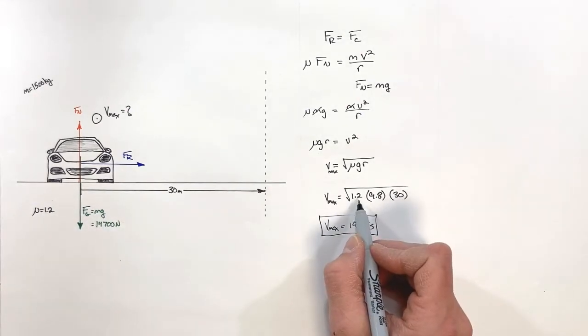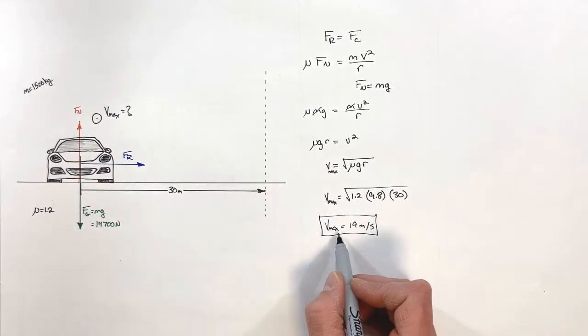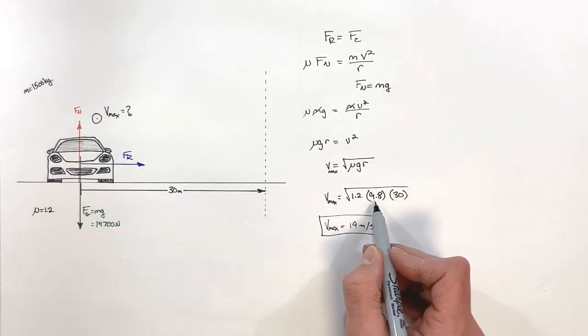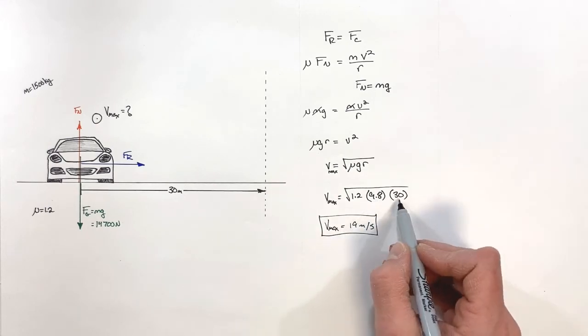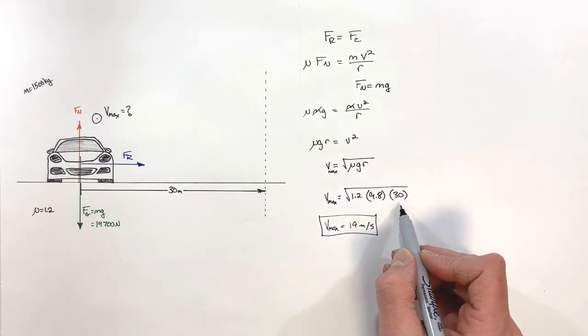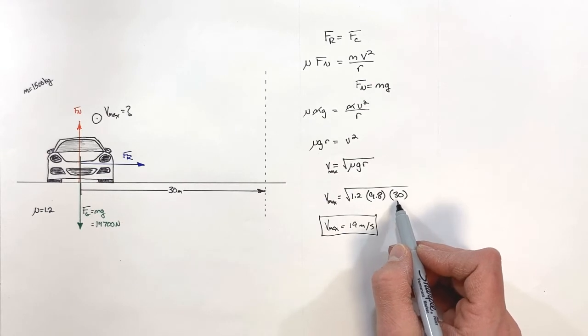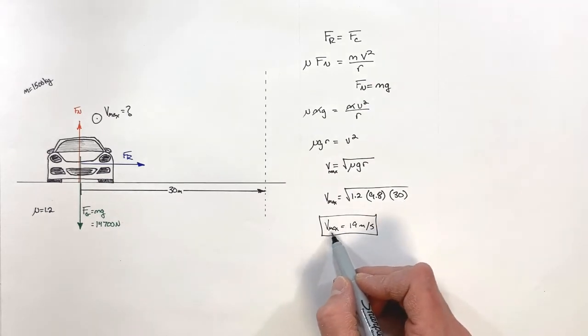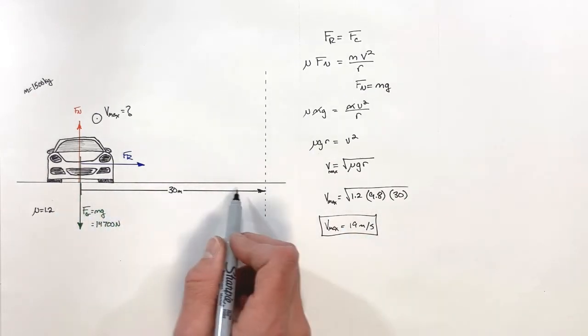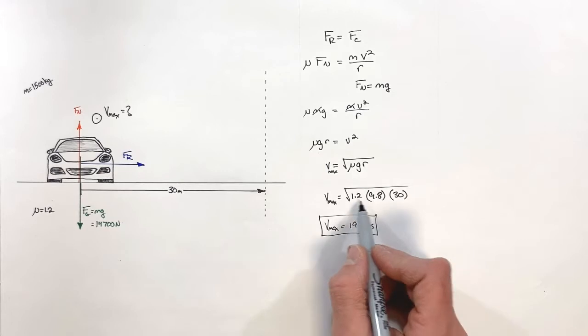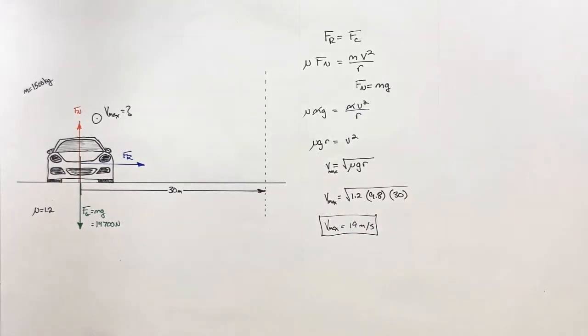By improving the tires, we would increase this coefficient of friction, and if the coefficient of friction was greater, that would increase the maximum velocity. Now, unfortunately we can't actually change the acceleration due to gravity, and the radius of the corner—well, that one's pretty much set. Yes, we could have a different corner with a greater radius, which would mean we could drive around a bigger corner faster. But if we're stuck with this 30 meter radius corner, well, we can really only change the tires.